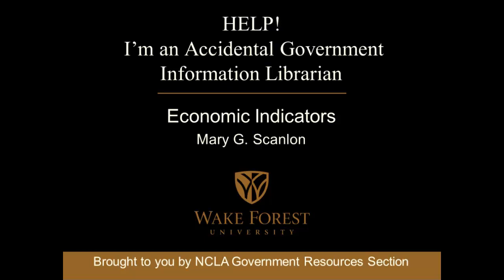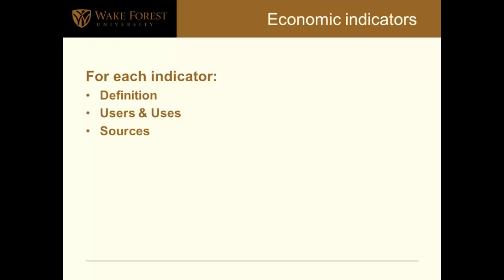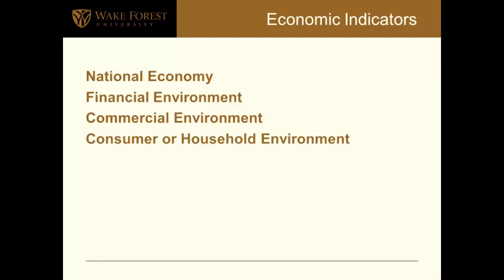What do I mean when I say economic indicators? We're going to run through a handful of them — there are many, but we can only cover top-line indicators today. For each, I hope to explain what that indicator is, how it's calculated, what it means, who would use it, and how. I'll also show you some government sources. I cluster economic indicators into four areas: the national economy, the financial environment, the commercial or industrial environment, and the consumer or household environment.